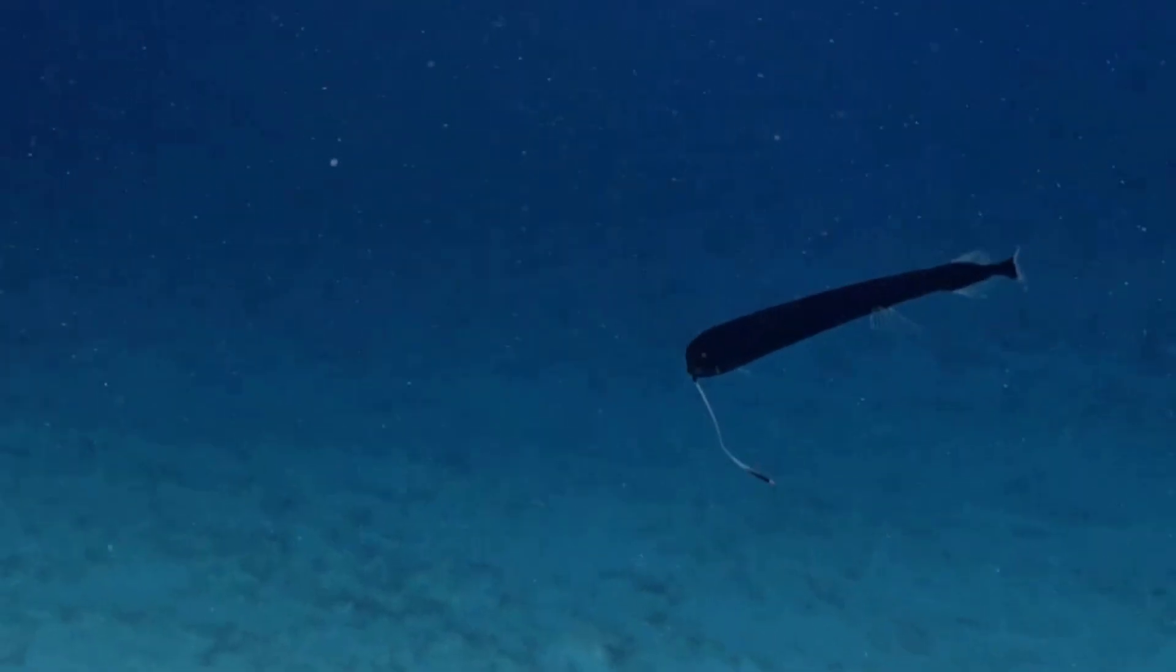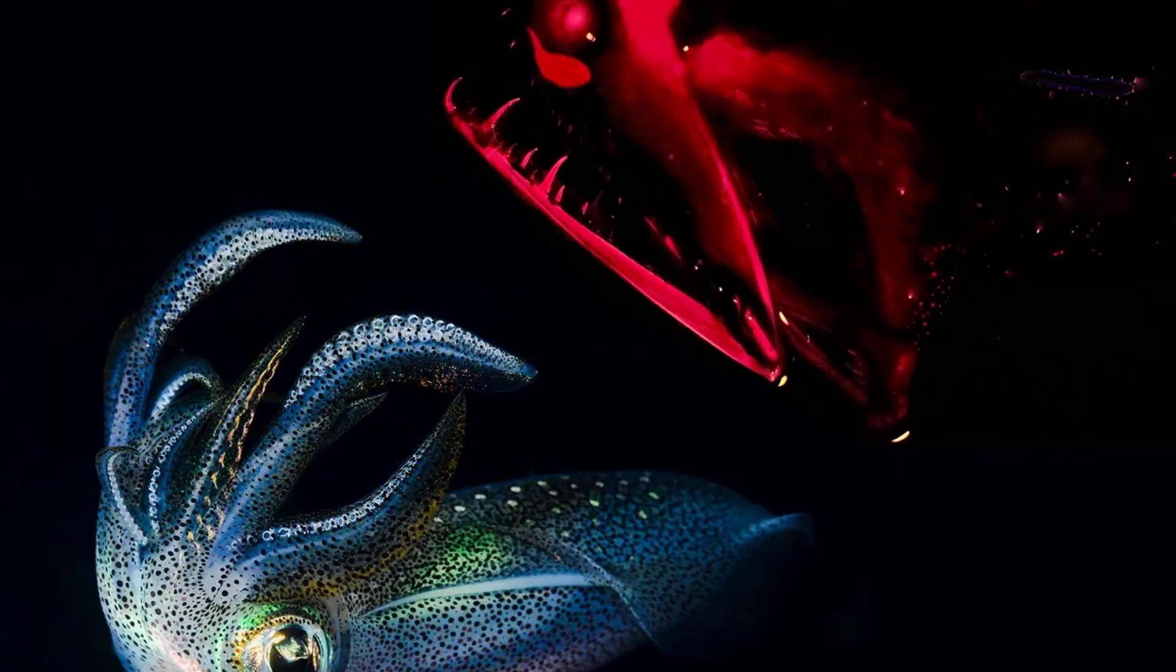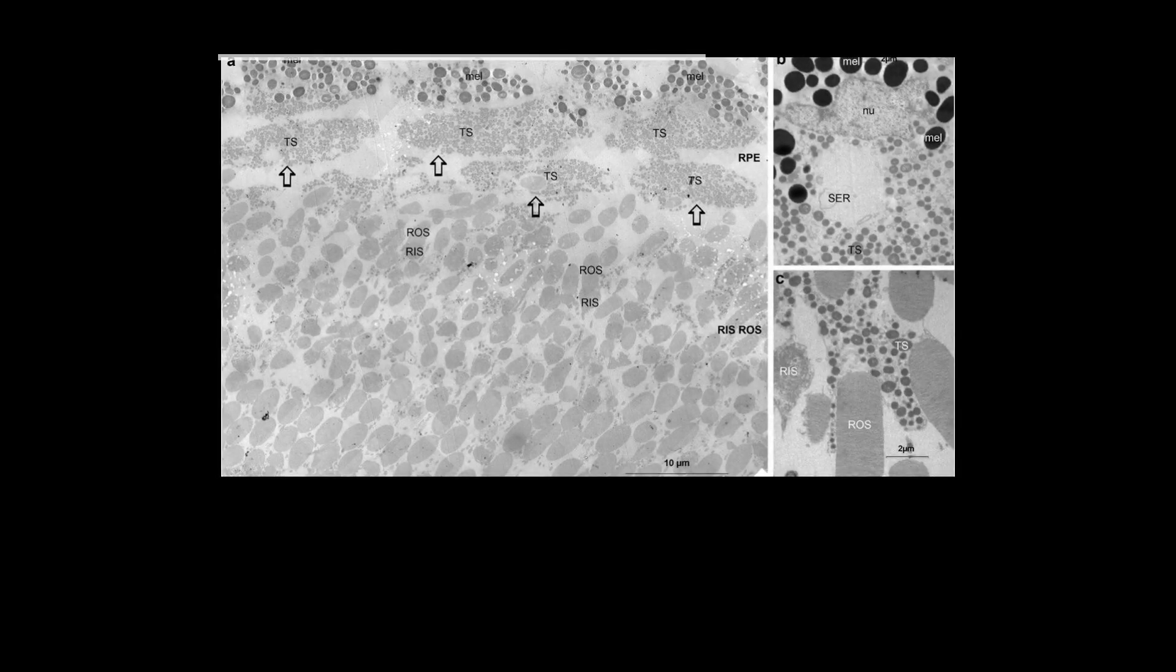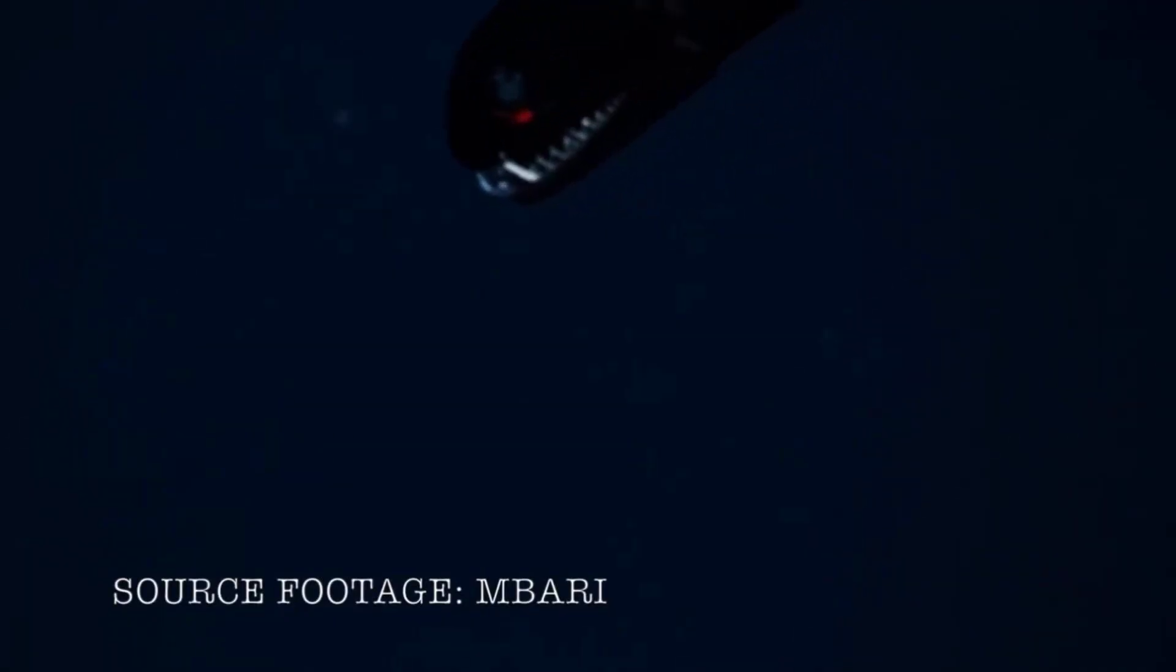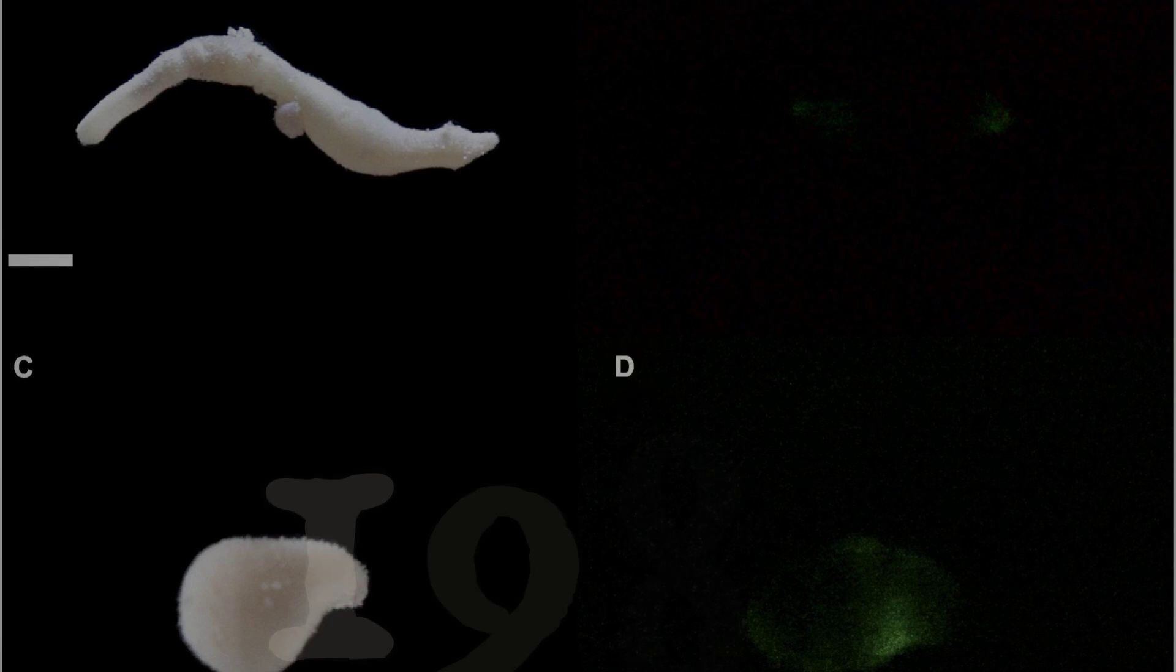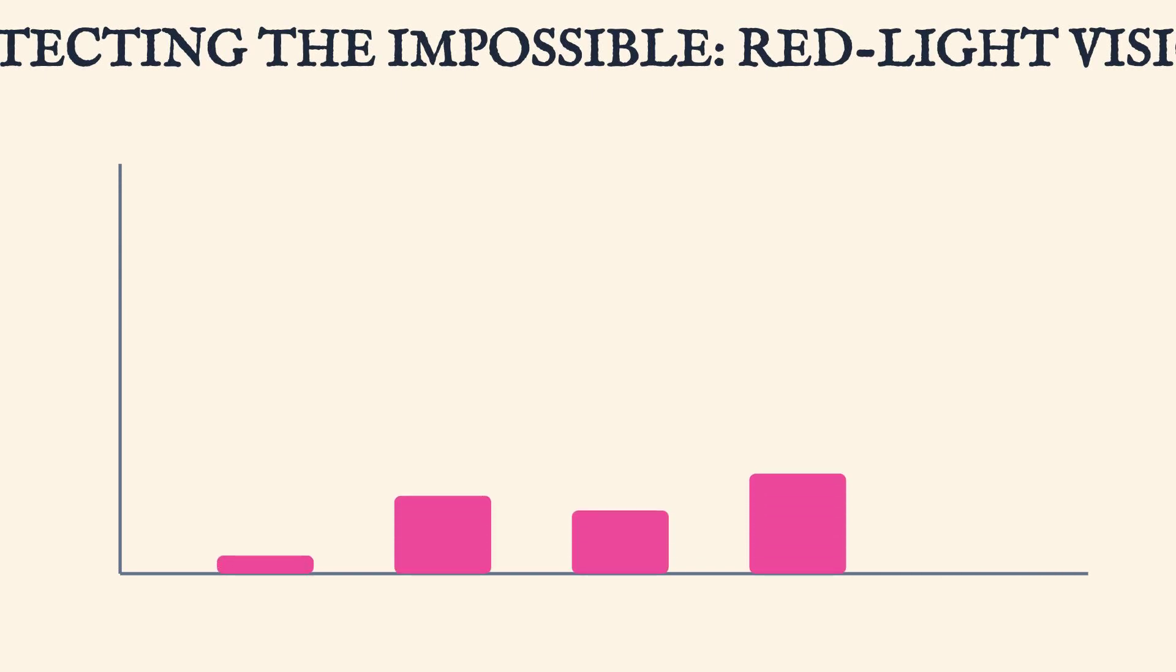Dragonfish patrol the depths with a different strategy. Along their jaw and beneath each eye, specialized photophores emit a deep red glow. To most ocean life, this light is invisible. But the dragonfish can see it, using this private wavelength to hunt and communicate without alerting rivals or prey. In 1983, scientists confirmed that dragonfish possess unique visual pigments, allowing them to detect red light in a world tuned almost entirely to blue.